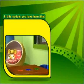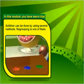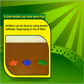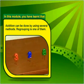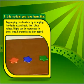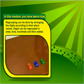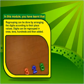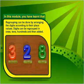In this module you have learned that addition can be done by using several methods. Regrouping is one of them. Regrouping can be done by arranging the digits according to their place values. Digits can be regrouped in ones, tens, hundreds and then added.